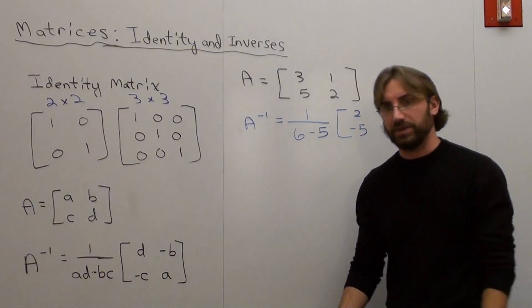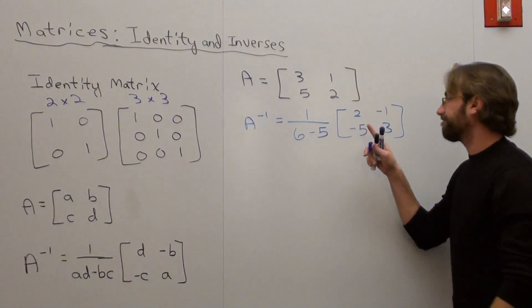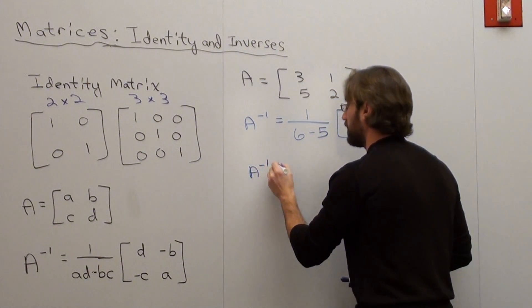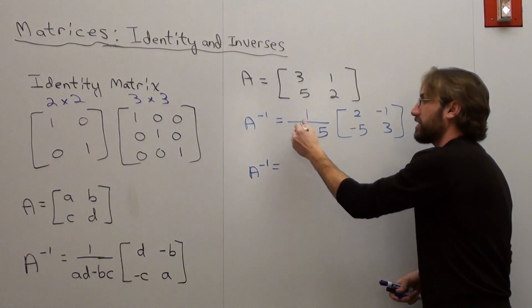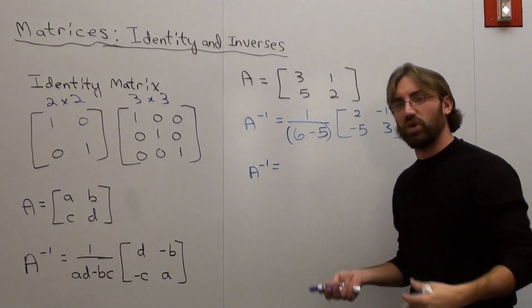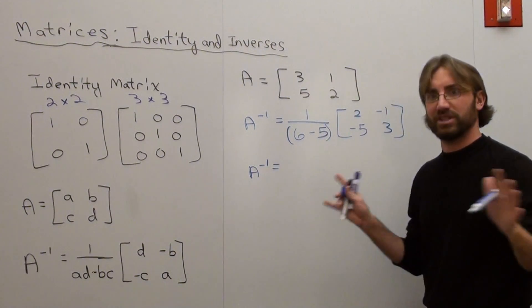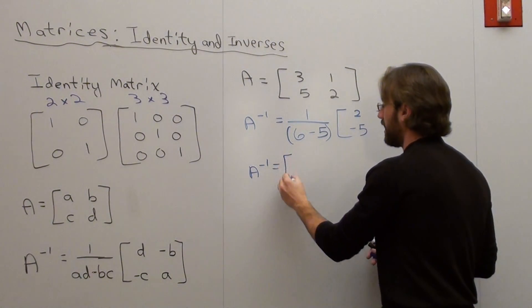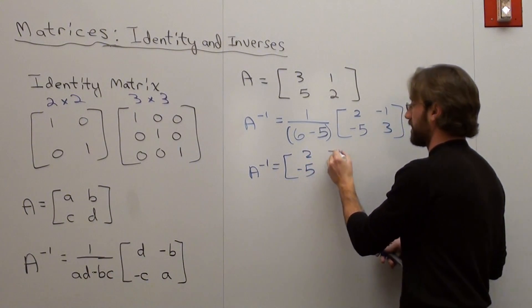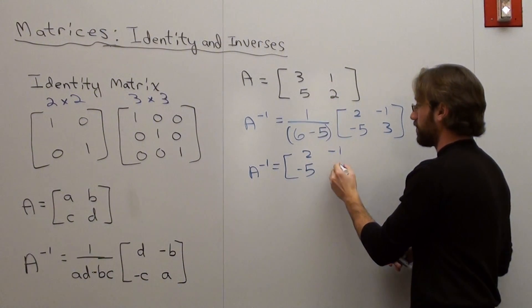That's pretty much all there is to it. I'll go ahead and write that. That's 1 over 6 minus 5. 6 minus 5 is 1, so it's 1 over 1. We don't need 1 over 1 in front of the matrix. It's perfectly fine as it is. I'm telling you that the inverse to this matrix up here is this one right here.